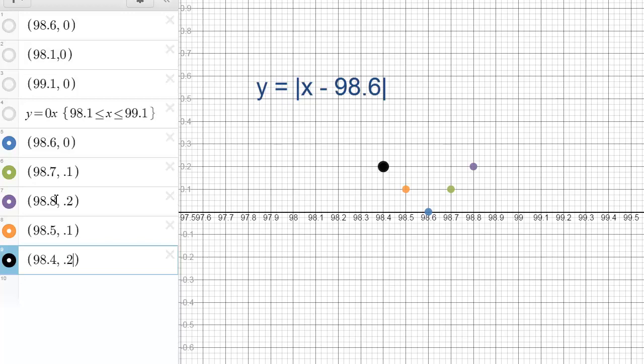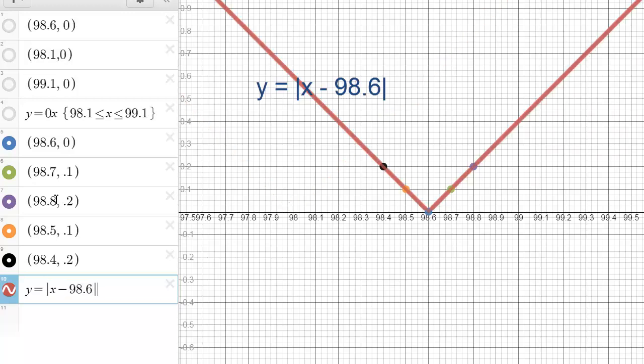So you can see that y equals the absolute value of x minus 98.6 is going to look like an absolute value graph that we graphed earlier, just shifted a long ways to the right. To limit it to where we're in a normal temperature range, we need to limit the y value or the range to be between 0 and 0.5.